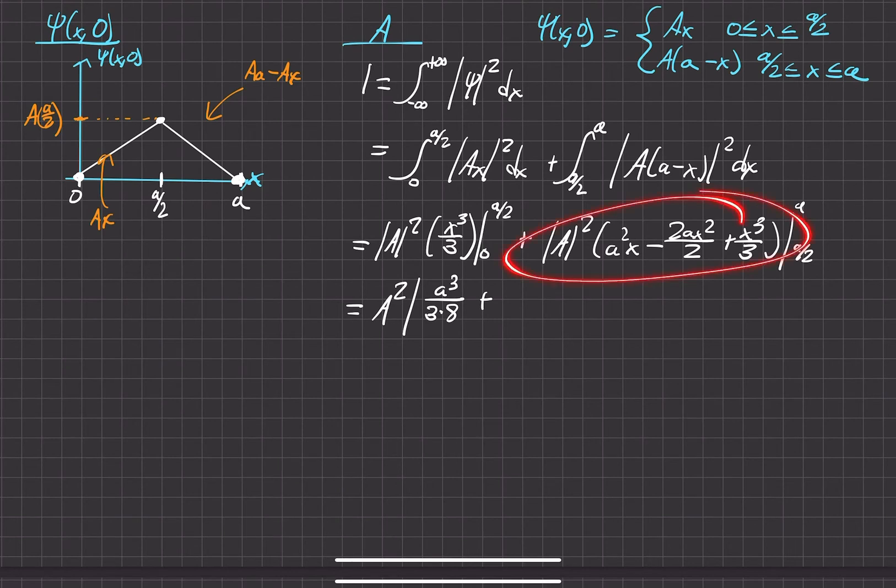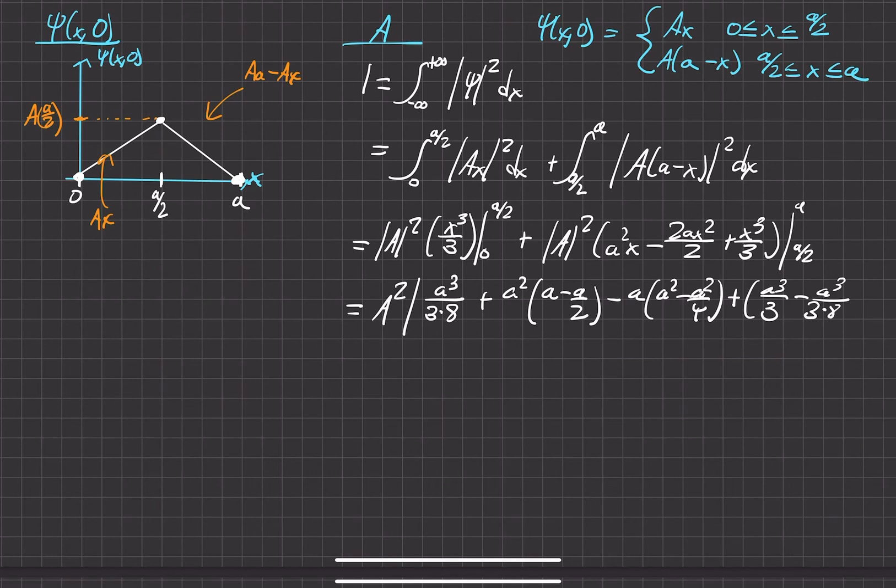Now, moving on to this one right here, specifically this term, let's see here and go ahead and pull out the constant, which is just a, a minus a over two. It's going to be minus, let's go ahead and pull out that a, a squared minus a squared over four and plus finally that last term, a cubed over three times, that's convenient. That's the same as the first term.